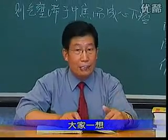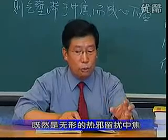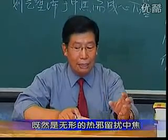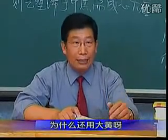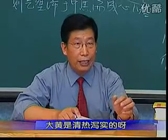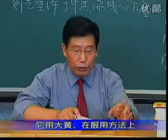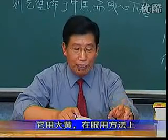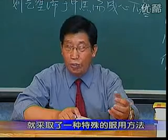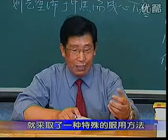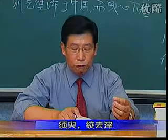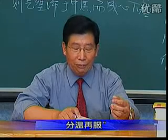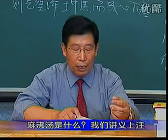大家一想，既然是无形的热流绕中焦、按之心下软，为什么还用大黄呢？大黄是清热泻下的呀。它用大黄在服用方法上采取了一种特殊的服用方法：上二味以麻沸汤二升渍之，须臾绞去滓，分温再服。麻沸汤是什么？就是滚开的沸水，正在沸腾的水。